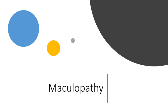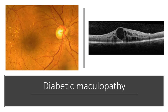The next category of diabetic retinopathy is maculopathy. Any oedema, hard exudates, or ischemia which involves the fovea is termed diabetic maculopathy. This is the most common cause of vision impairment in diabetics, especially those with type 2 diabetes. There are a few different types: focal, diffuse, ischemic, or clinically significant macular oedema.